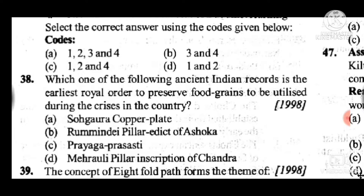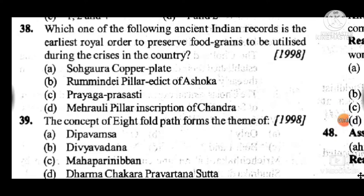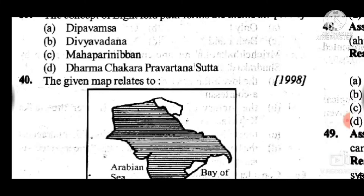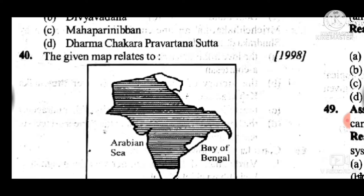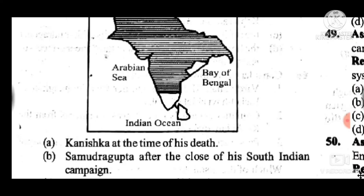Question 39: The concept of the Eightfold Path forms the theme of — answer is D, Dharmachakra Pravartana Sutra. Question 40 is a map-based question where a region in the Indian map belongs to which emperor — answer is C, Ashoka towards the close of his reign.